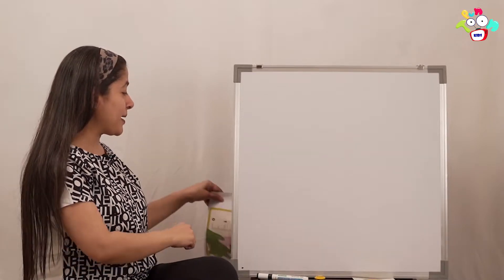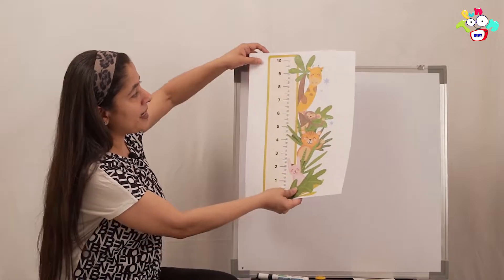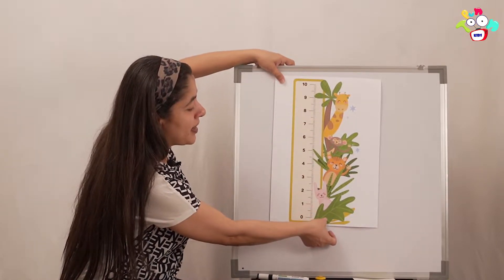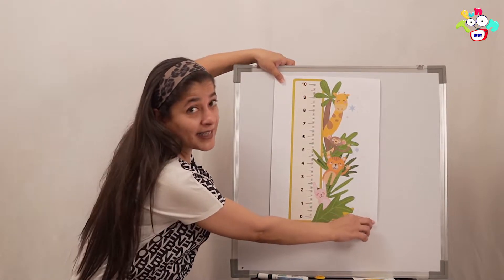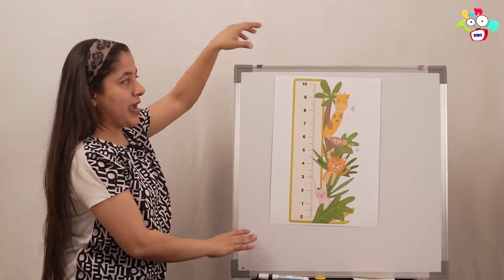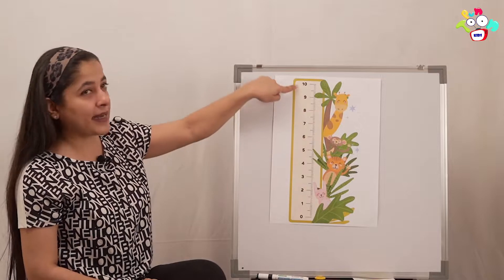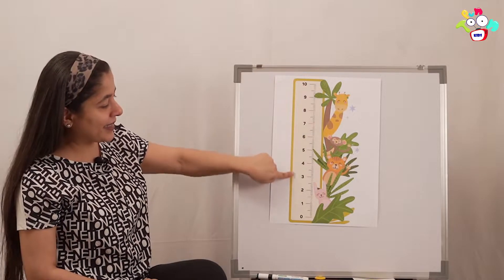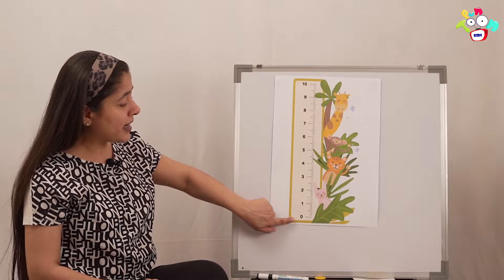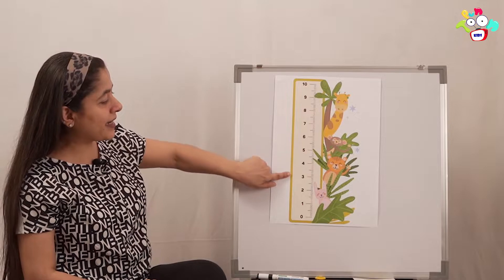I have something to show you all. See what this is — this is a number line. And in this number line, the numbers are in ascending and descending order. Ascending and descending order.